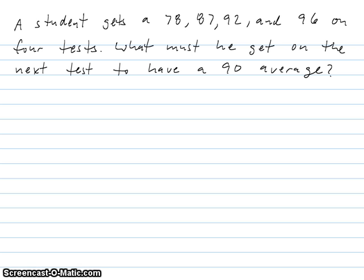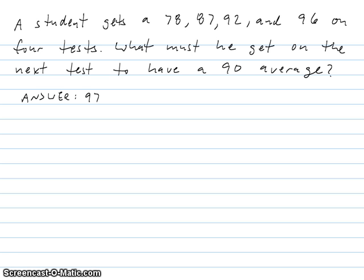Here is a very popular question that appears on standardized tests. A student gets 78, 87, 92, and 96 on four tests. What must he get on the next test to have a 90 average? Take a few minutes to think about how you might answer that. The answer turns out to be 97.